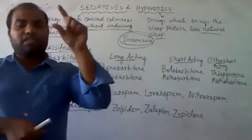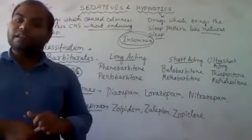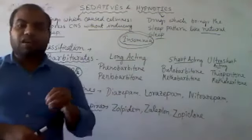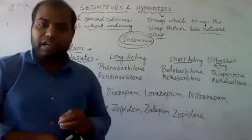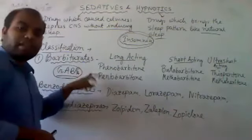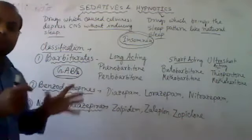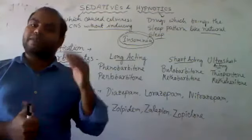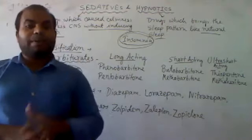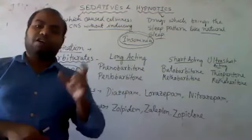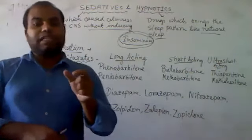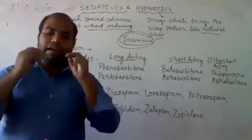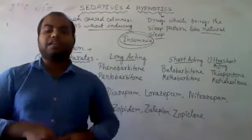The GABA-A receptor contains a chloride ion channel. The chloride exists in both extracellular and intracellular fluid. Chloride acts as an inhibitory agent — it inhibits the excitation of the brain and has a calming effect. Barbiturates bind to the GABA-A receptor and prolong the opening of the chloride channel. This causes chloride influx and hyperpolarization, which reduces the action potential, leading to proper inhibitory signals. As a result, your muscles relax, your eyes relax, your brain relaxes, and you can easily fall asleep.